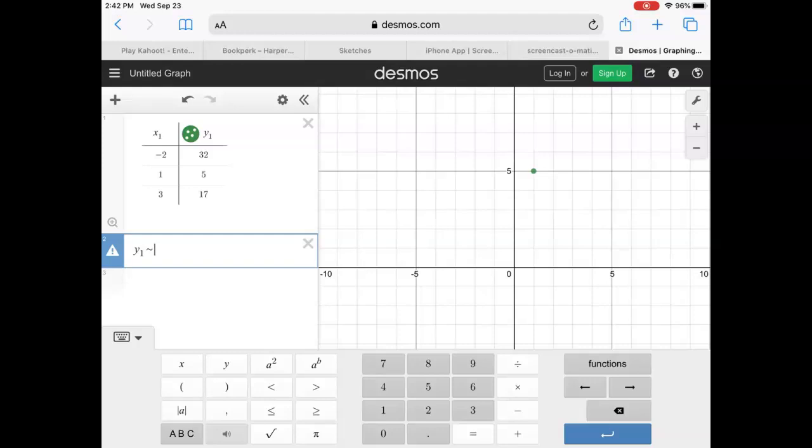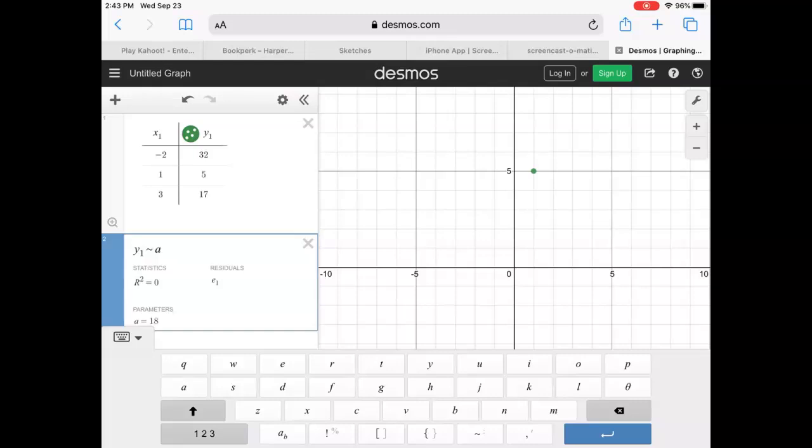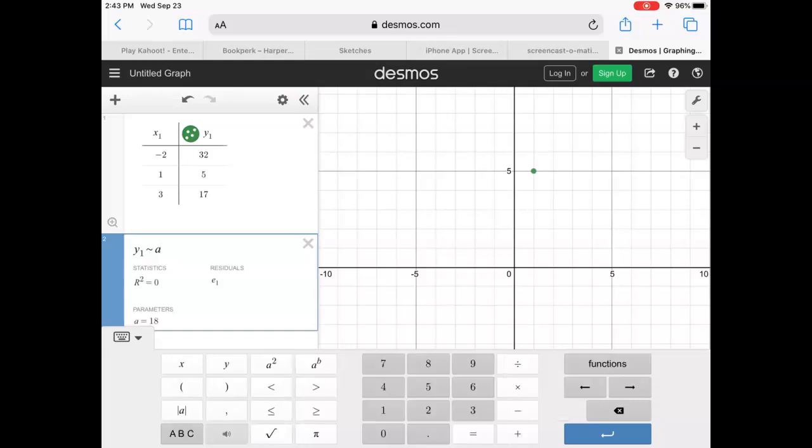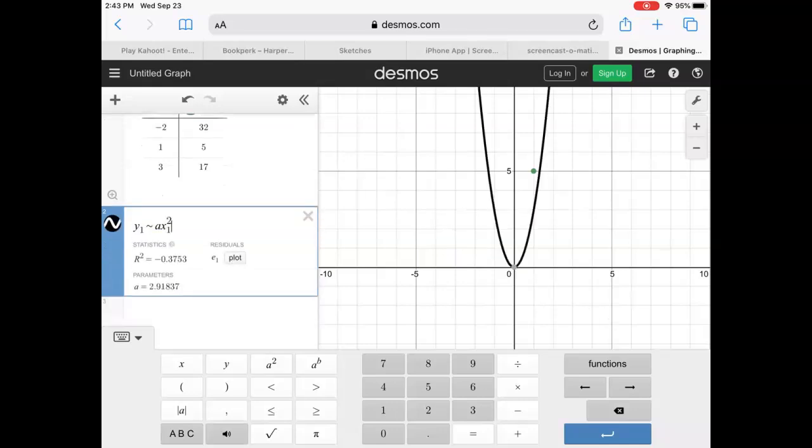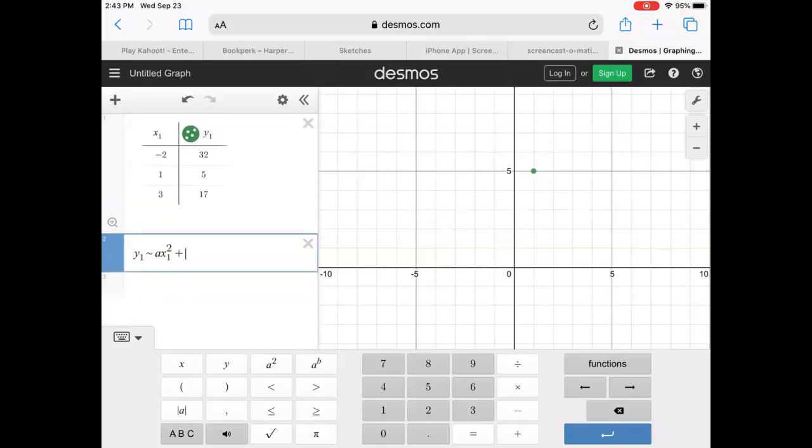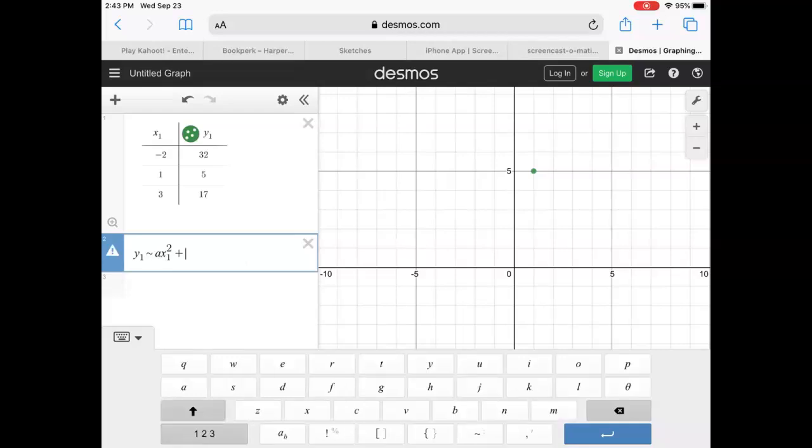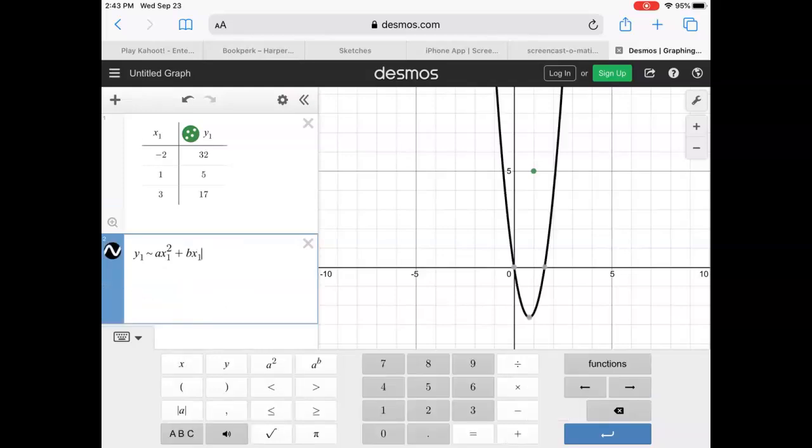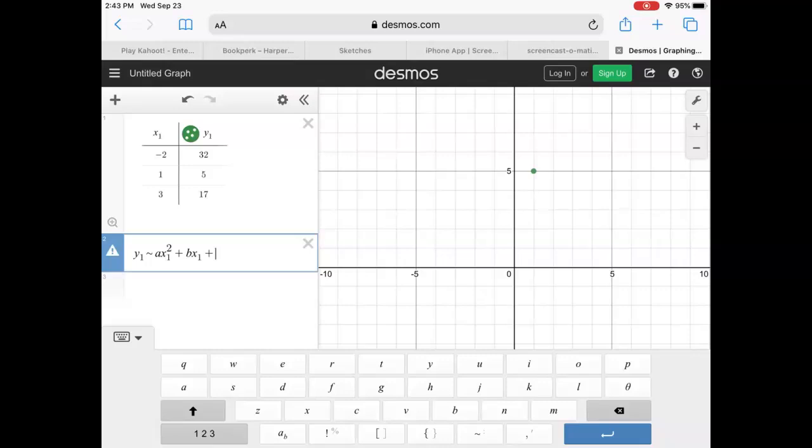So we have y1 is approximately equal to, and then we're going to put letters in. So we're going to put a, and then we're going to do x1 squared. And then we're going to say plus, and then b, and then x1. So again, we're just filling in our formula, trying to match it to our table. Plus, and then we put c.